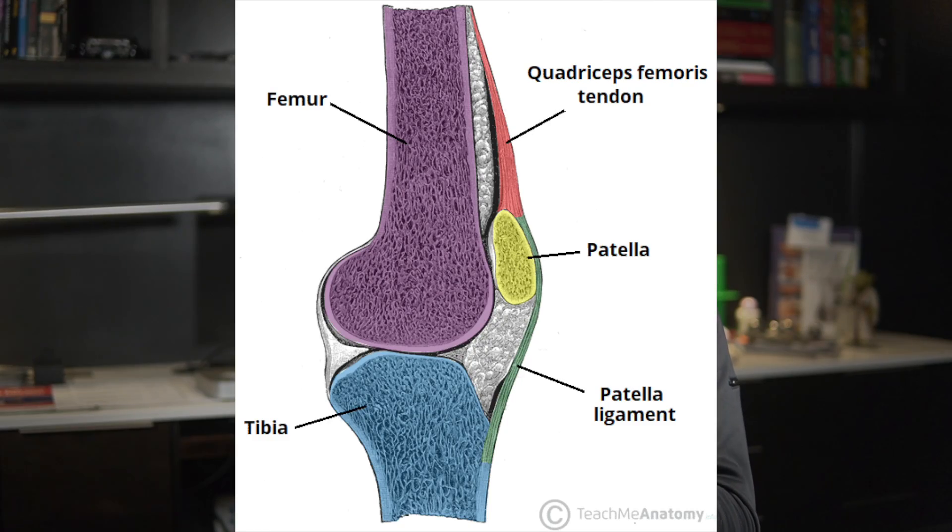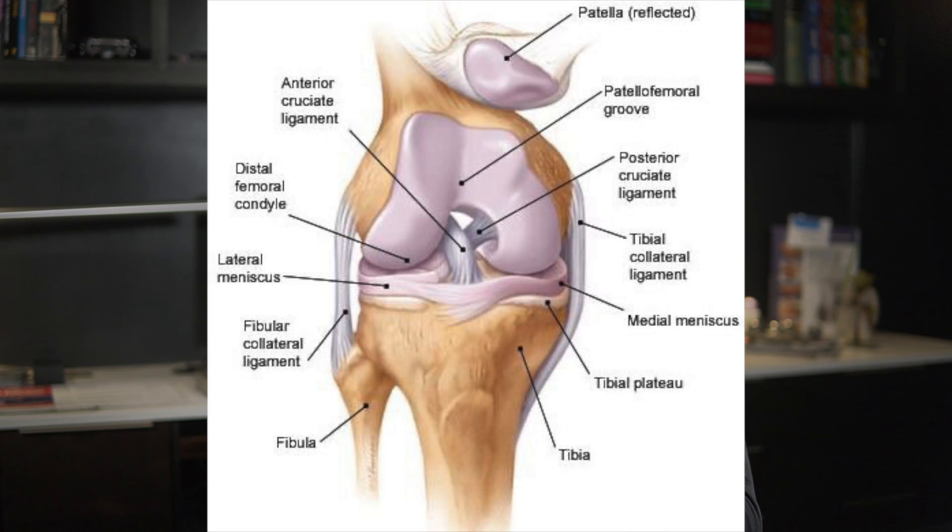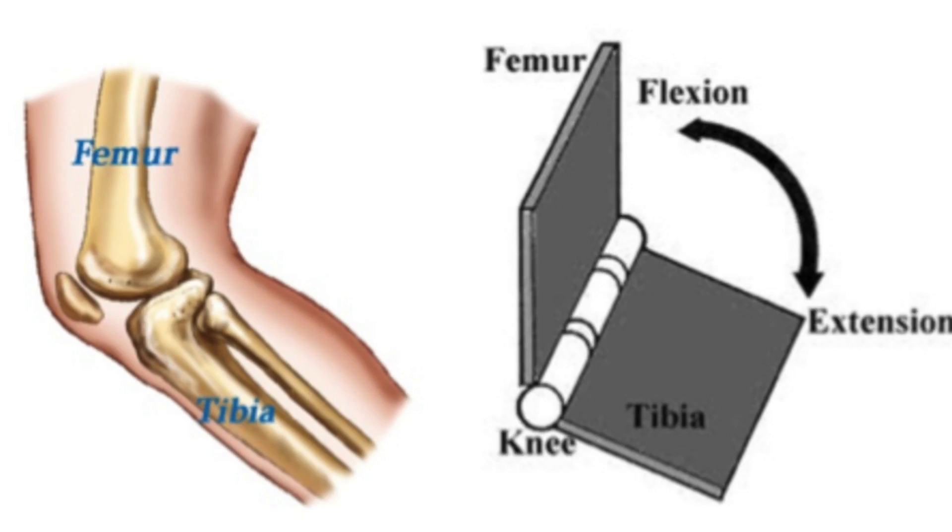Regarding anatomy and function, the knee is a complex hinge joint formed by the femur, tibia, and the patella, supported by ligaments, tendons, cartilage, and muscles. Its primary function includes weight bearing, stability, and facilitating movements such as flexion, extension, and a little bit of rotation. Any disruption or pathology affecting these structures can lead to knee pain and dysfunction.